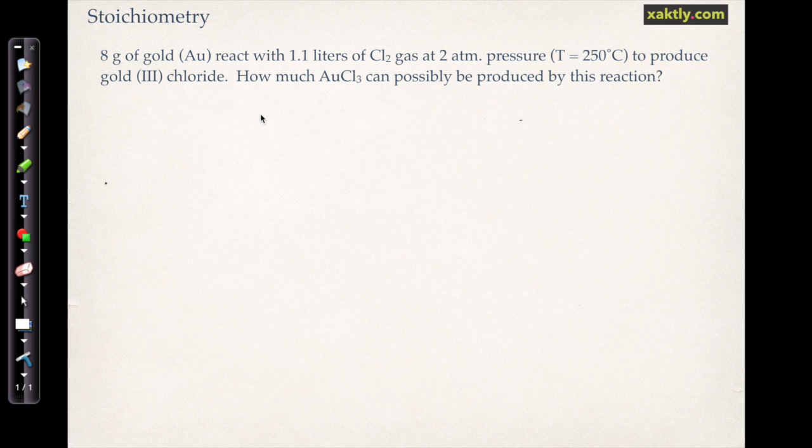We notice that gold metal is going to react with chlorine gas to produce gold 3 chloride. So that's pretty easy to write out. Cl2 is the gas, and gold 3 chloride is going to be AuCl3. Each negative charge of the chlorine ions match up with a positive charge of the gold, so it's Au3+.